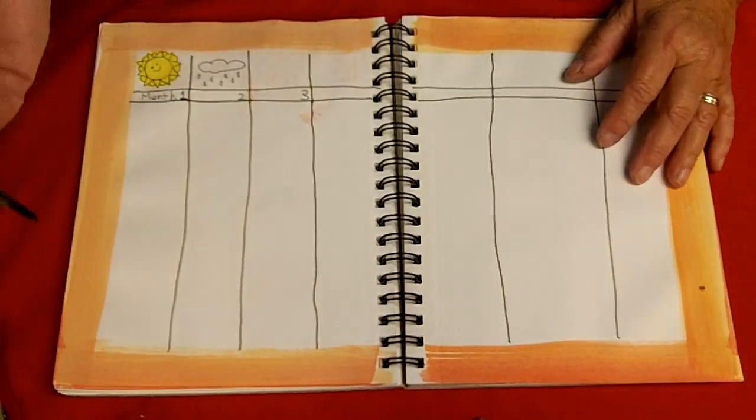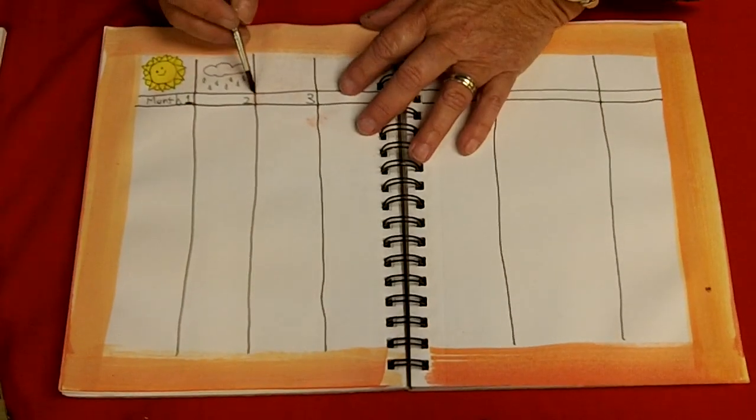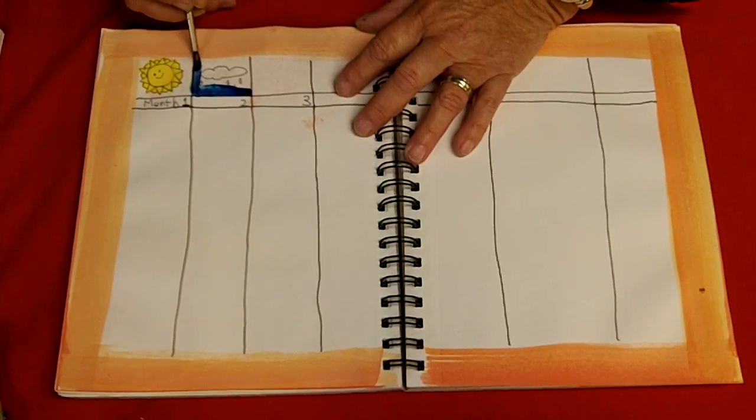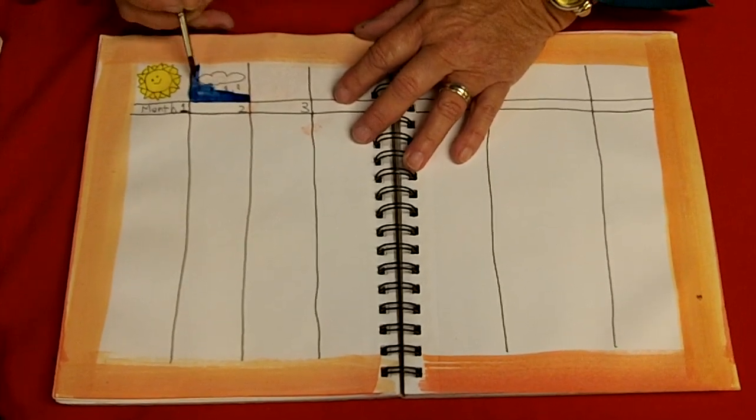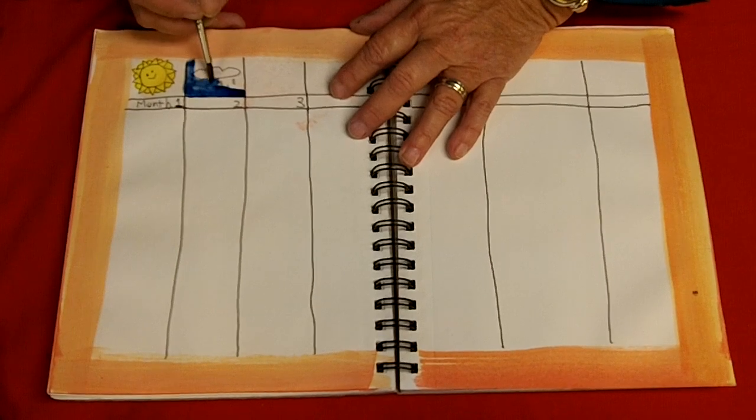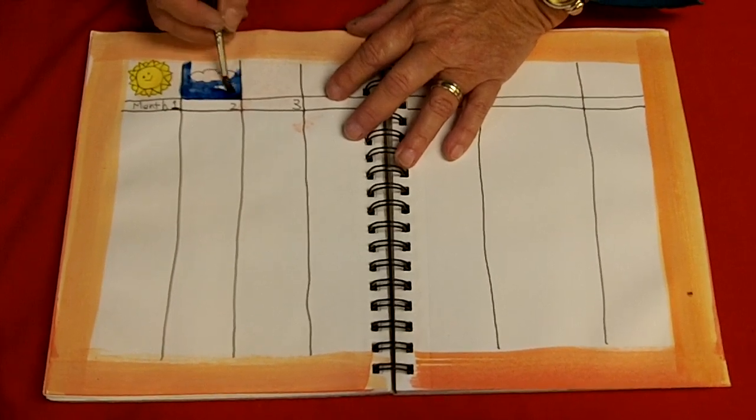And now for the cloud. Normally clouds are kind of white, but maybe the sky is dark blue because it was a really cloudy day. Dark and dreary.